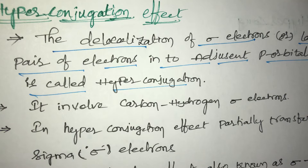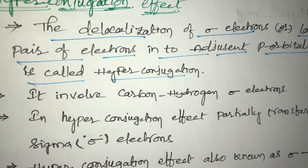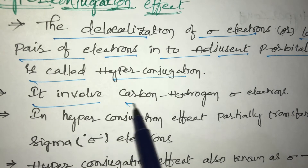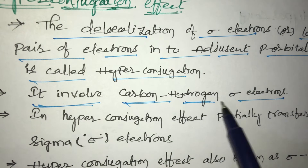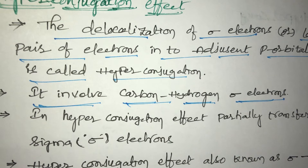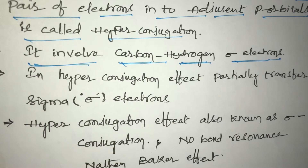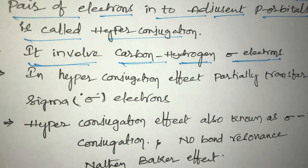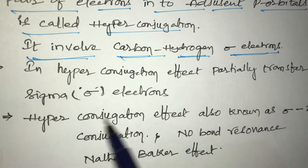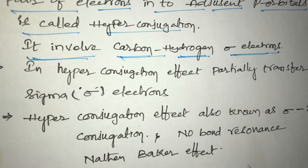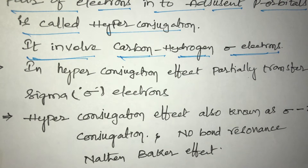One more point, students: hyperconjugation is a permanent effect. It involves only carbon and hydrogen sigma electrons. In the hyperconjugation effect, there is a partial transfer of sigma electrons.